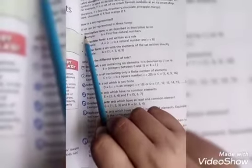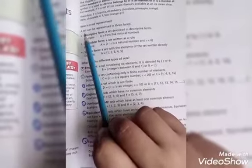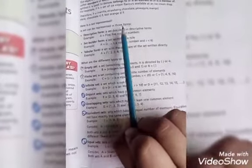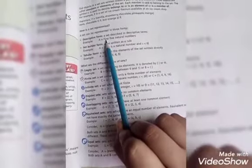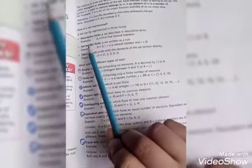Now I will define descriptive form. A set described in descriptive terms. Example: first five natural numbers.